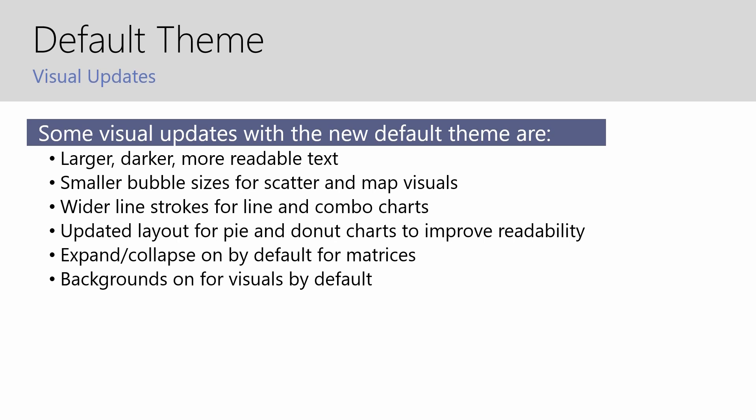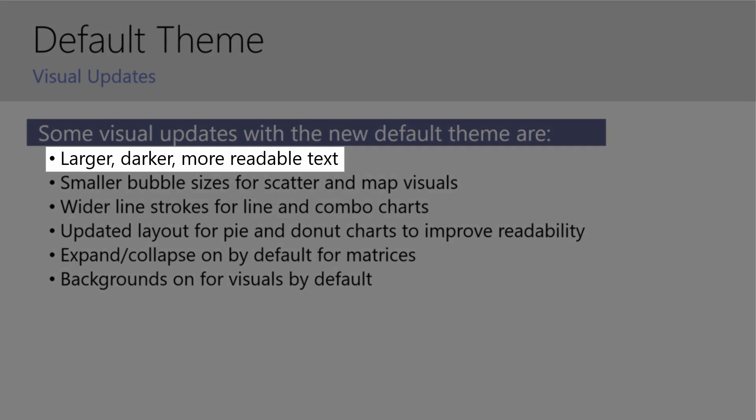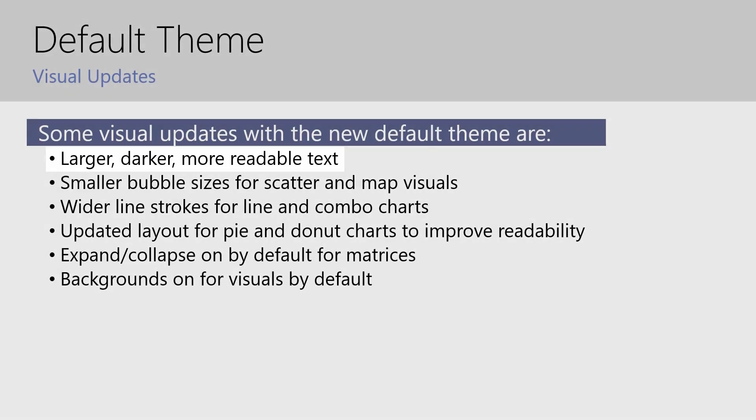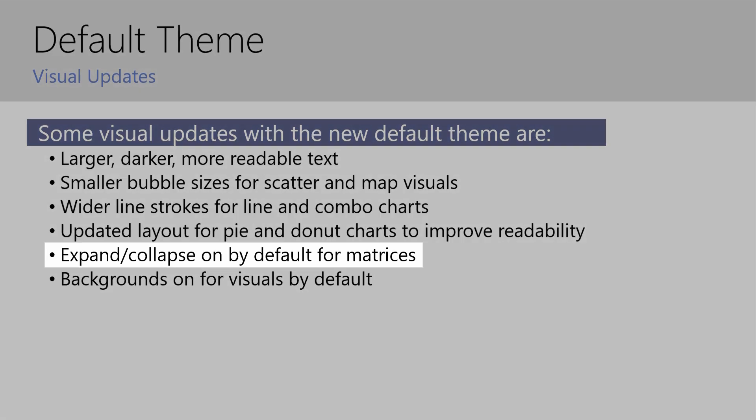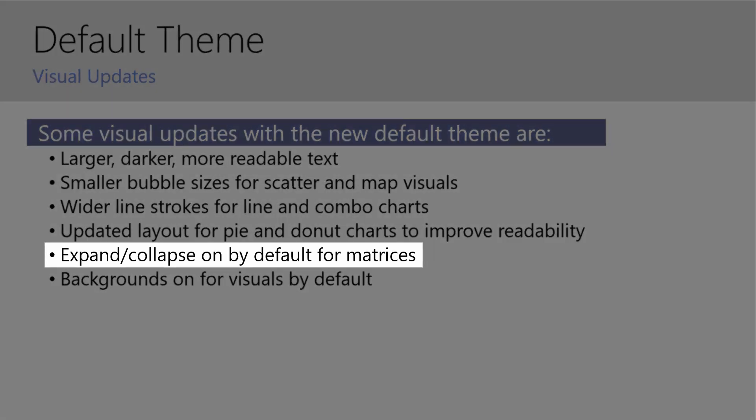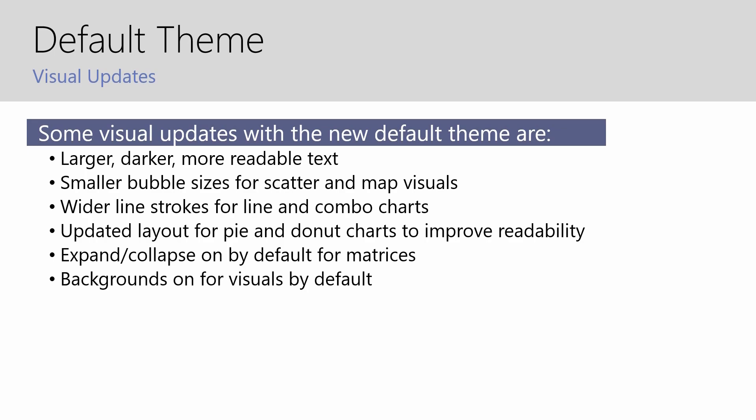Even more exciting is that the default theme got a major overhaul too. The most important features are listed here, but I want to call out that I'm really happy that they increased the font size across all the visuals and made the font color even darker and more readable. Plus, those wonderful expanding collapse icons in the matrix tables are turned on by default as they should be. I could go on about these additions, but let's hop into Power BI and see how they look.